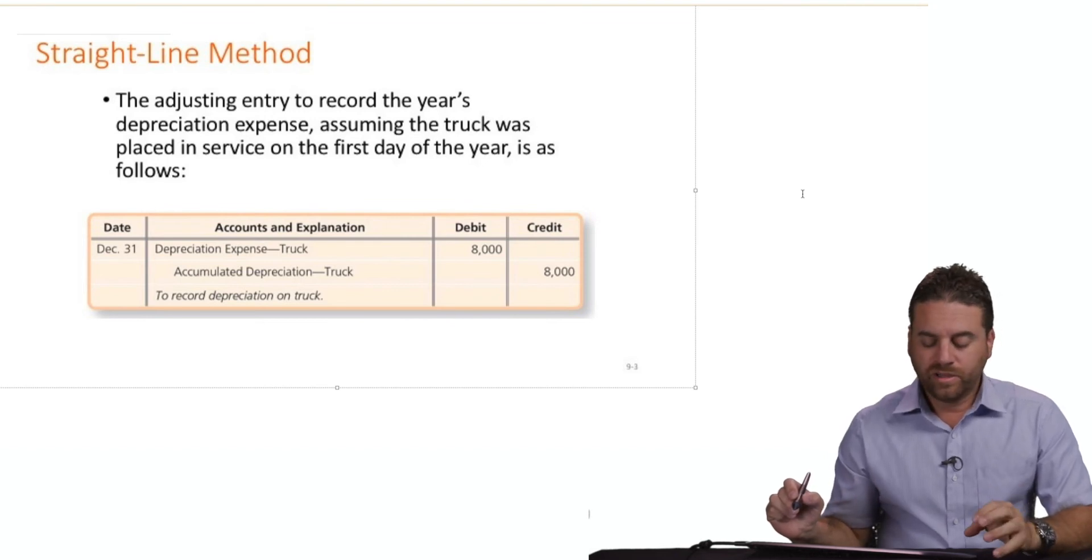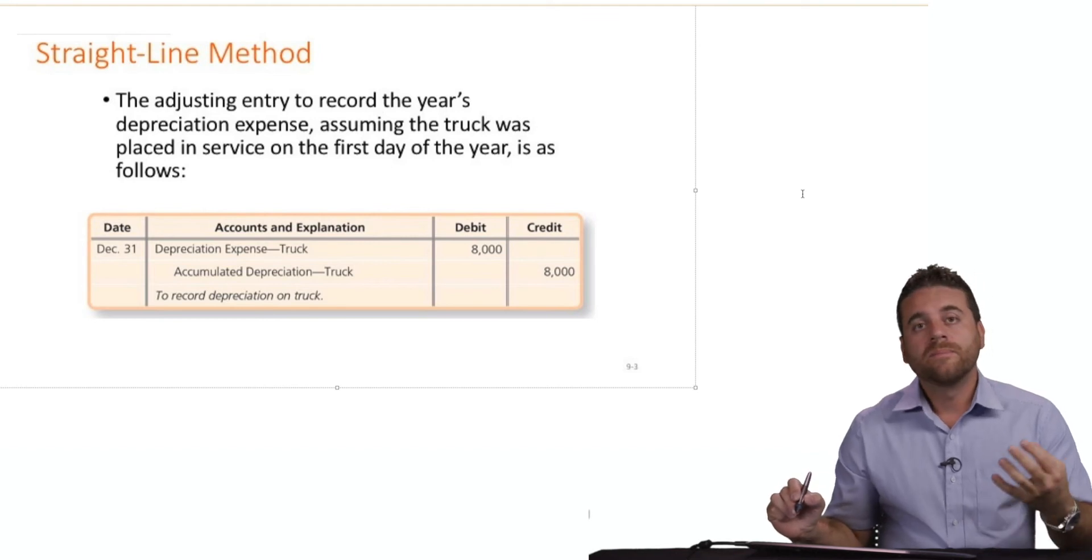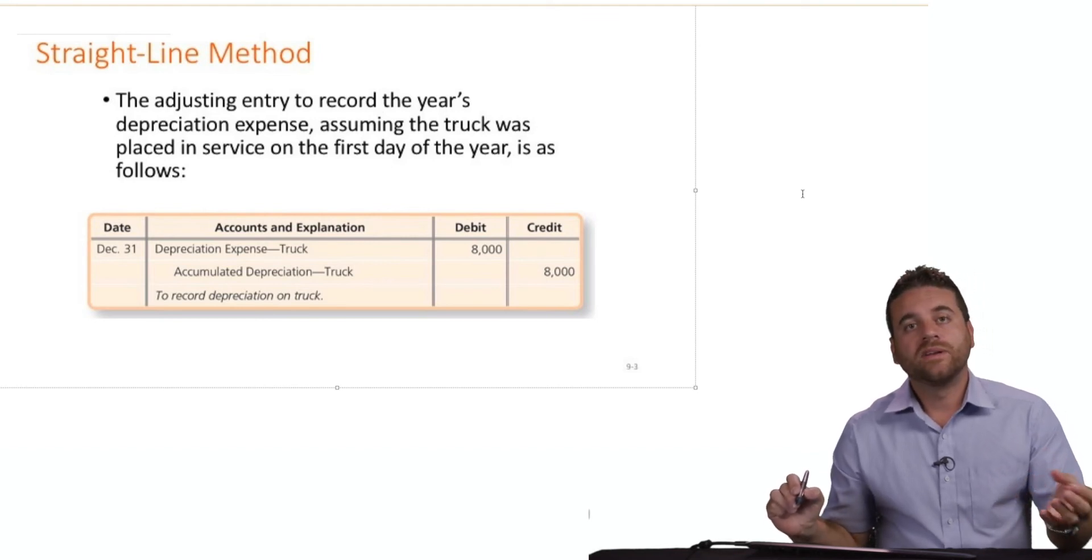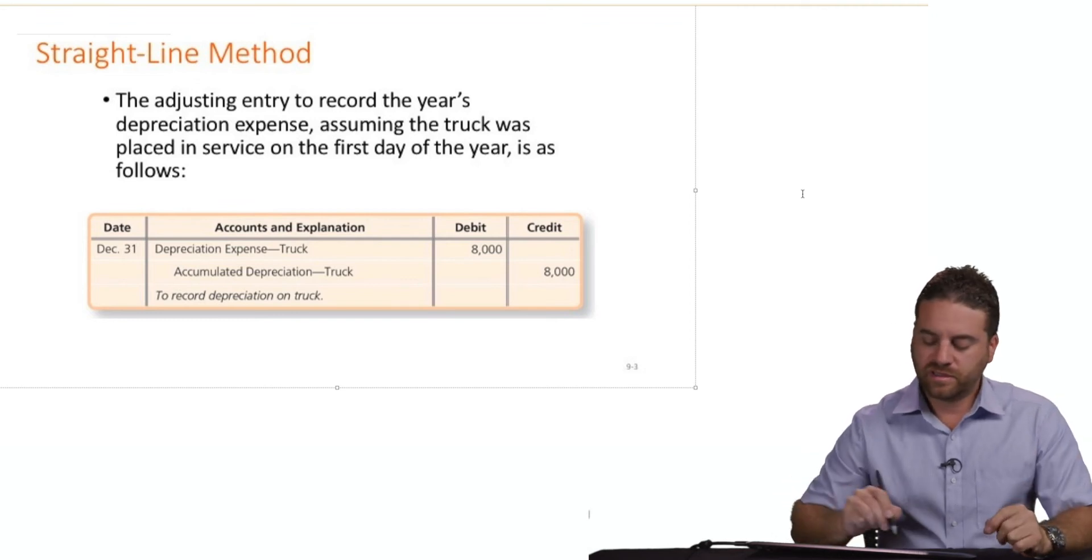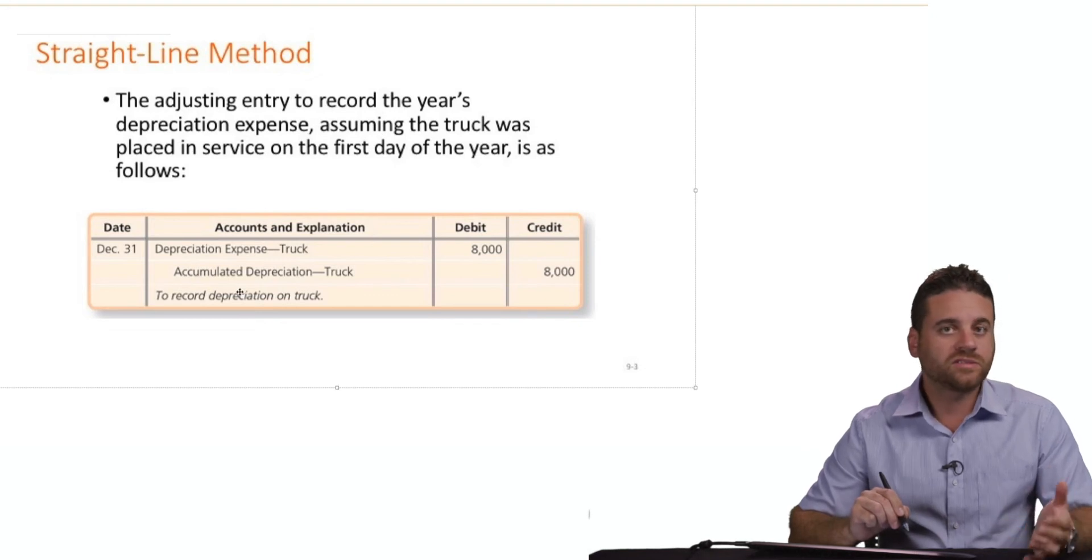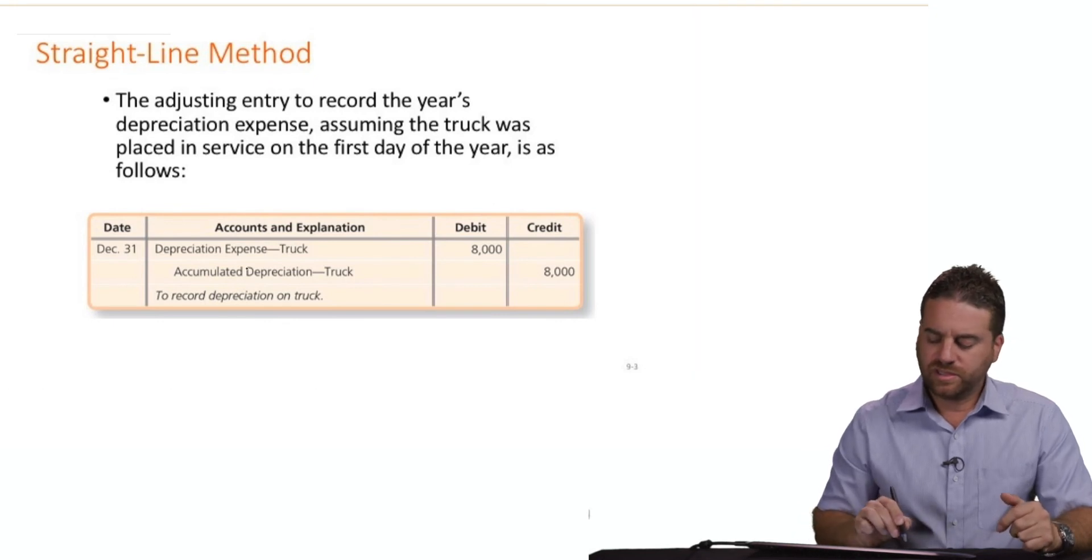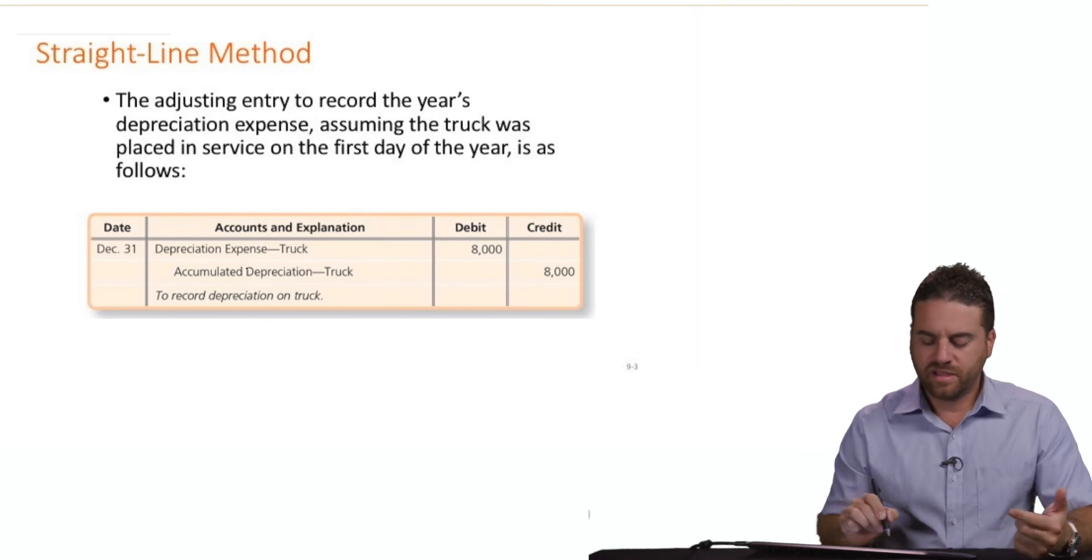In accounting, we call these kinds of accounts contra-accounts. Contra-account means it will have a negative balance in where it's classified. It's classified as an asset but will have a credit balance. Credit in the asset will be a negative. So this is the journal entry: debit depreciation expense $8,000 and credit accumulated depreciation $8,000.